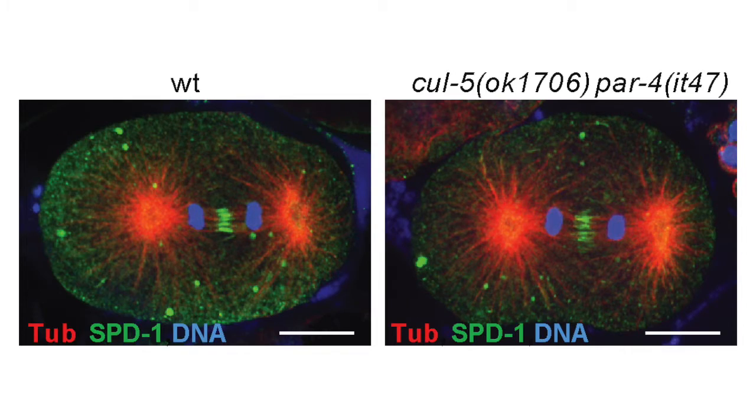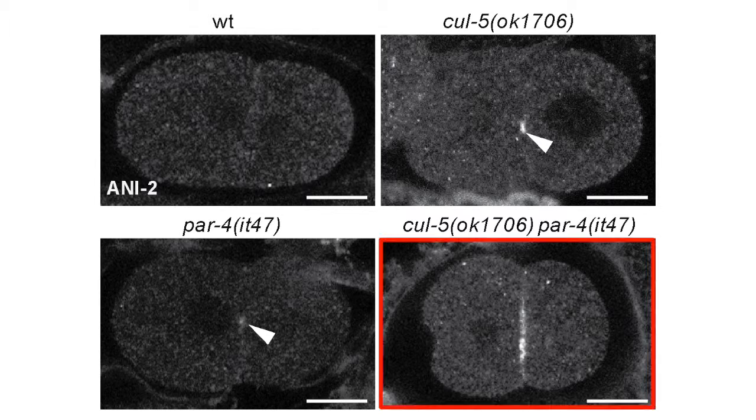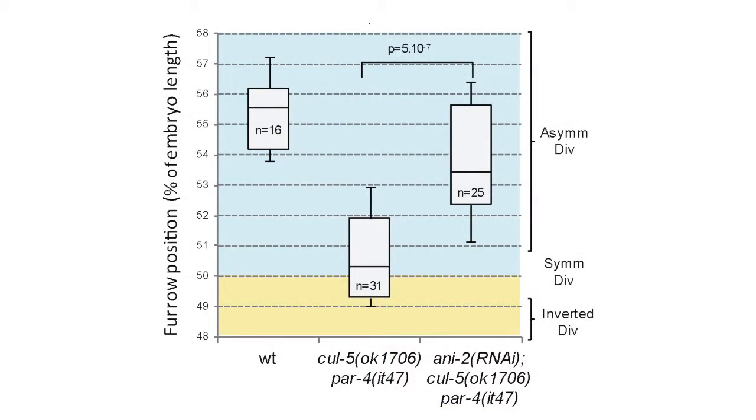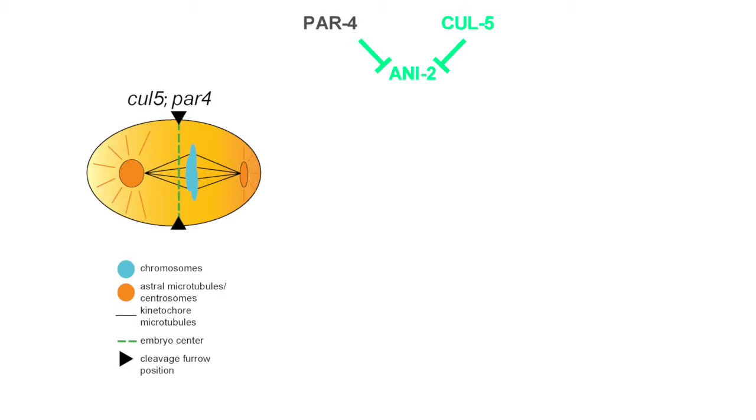Jean-Claude Lade's lab had found that PAR4 is a negative regulator of anilin 2 so we thought we should have a look at this and we found that anilin 2 is very strongly accumulating in CUL5 par4 embryos. To test if this was important and linked to our phenotype we then removed anilin 2 in PAR4 and this is where we see a suppression of the phenotype indicating that anilin 2 must be responsible at least partly for the shift of the furrow towards the anterior.